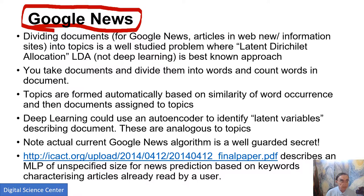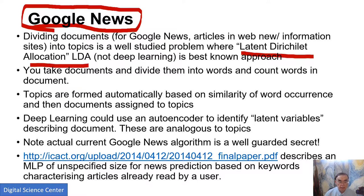The problem with dividing documents — which for Google News are articles on the web, mainly information sites — into topics, which Google News has lots of, is a well-studied problem where classically the Latent Dirichlet Allocation method, LDA, is the best known approach. You take the documents, divide them into words, count the words in each document, use them to match documents, automatically form topics because of the similarity of word occurrence, and then assign the documents to topics.